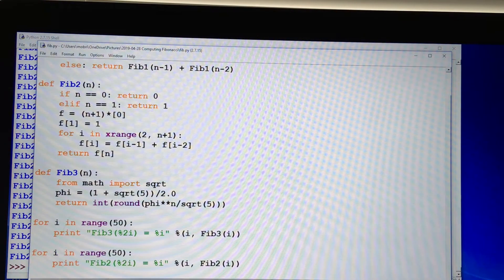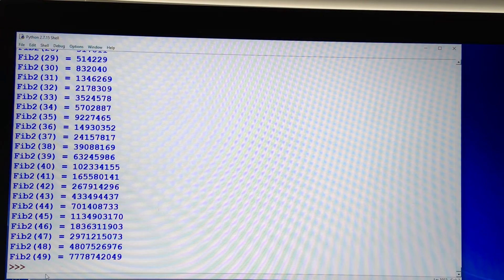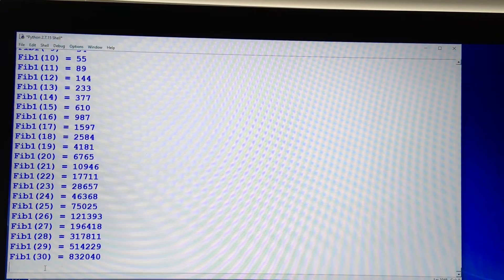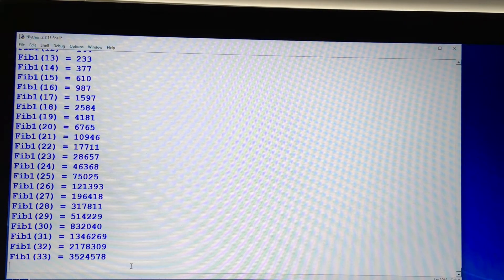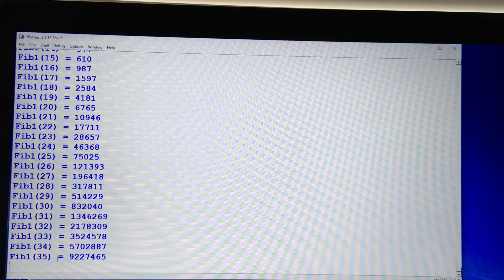Now let's try fib1. Fib1 is the standard recursive definition. So let's paste that one in there, and look what's happening. It's really, really slow, and it's getting slower. Fib 34, Fib 35 is really, really slow.